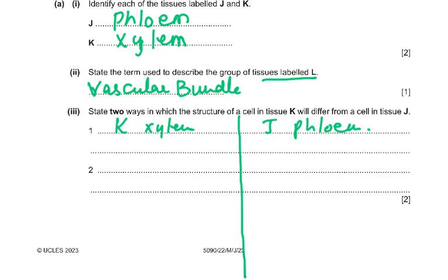State two ways in which a cell in tissue K (xylem) differs from a cell in tissue J (phloem). The xylem has a thick wall; phloem has a thin wall. Xylem is lignified; phloem has no lignin. In xylem there are no cell contents; in phloem there are cell contents. Xylem has no end walls; phloem has sieve plates. Phloem has companion cells; xylem does not. You only need to give two points.